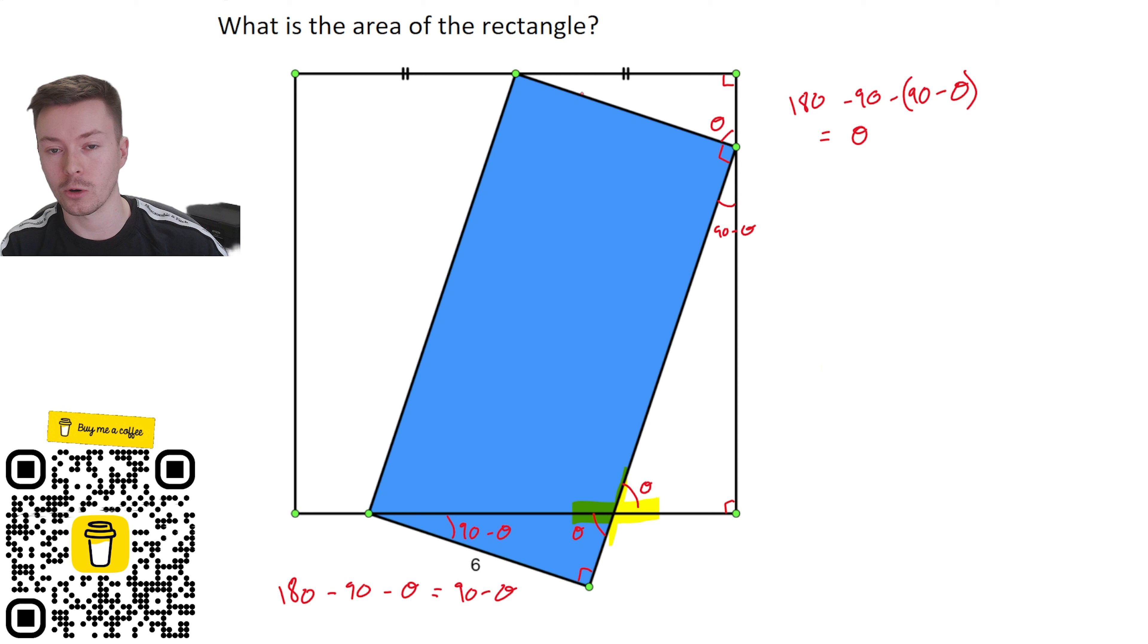We've also got another right angle in this top right triangle and then again this other angle must be 90 minus theta. Now by exactly the same logic we've got a right angle at the top of this rectangle so this angle here must also be theta.